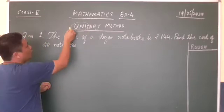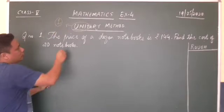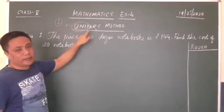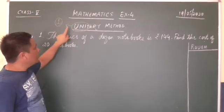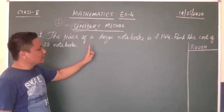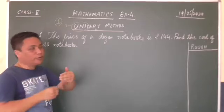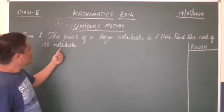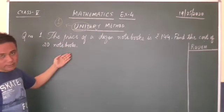Unitary means one. So in a simple term, in this method you have to get the number of one product or one any substance that you are going to find out. Then you need to find out the required cost or number, whatever the person has asked.